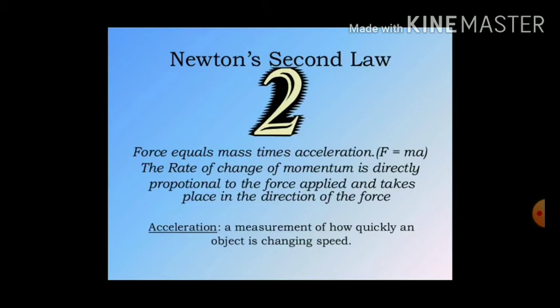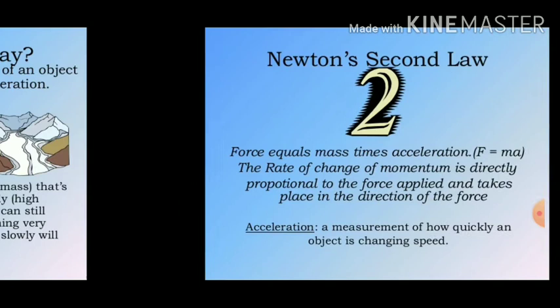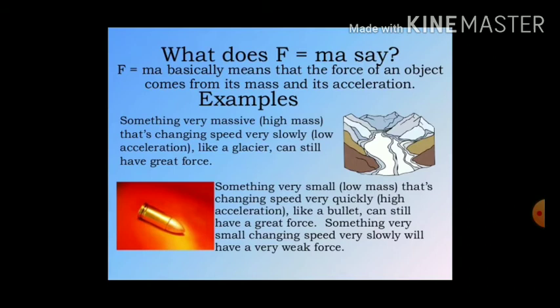If you have any object's mass and its acceleration, you can easily calculate the force. F equals MA basically means that the force of an object comes from its mass and its acceleration. Newton told us that F equals MA — so what does MA suggest?